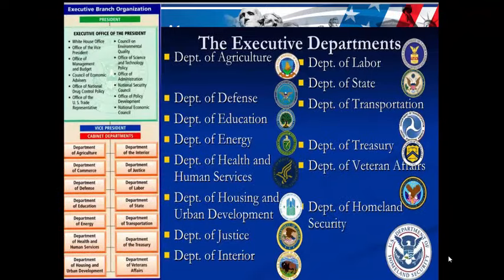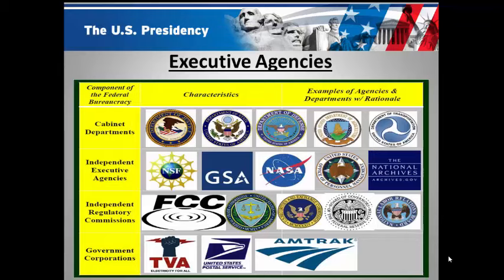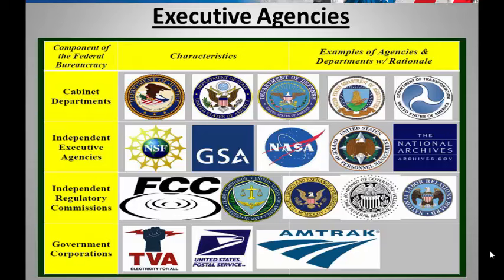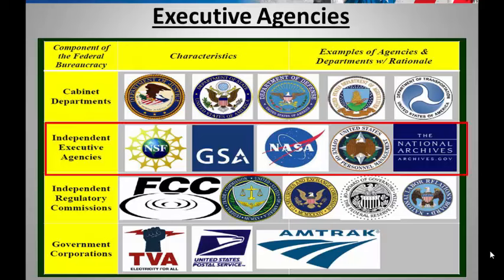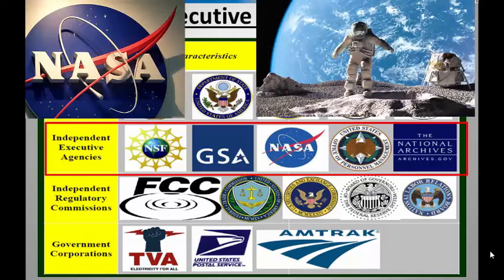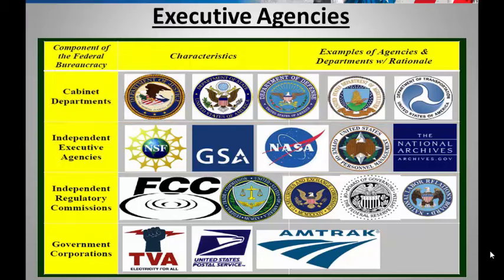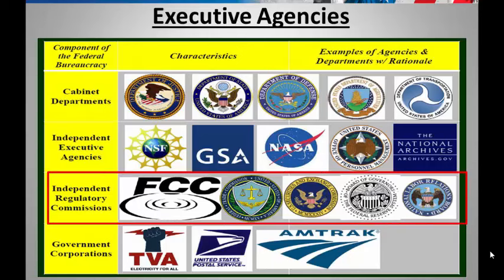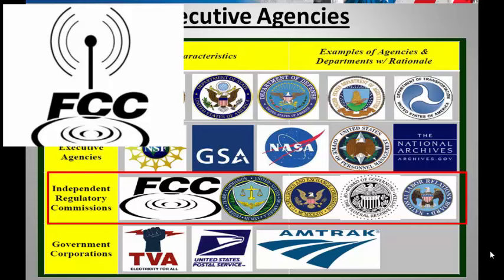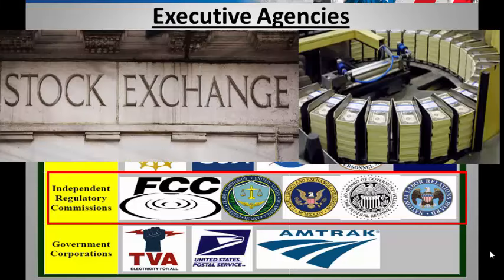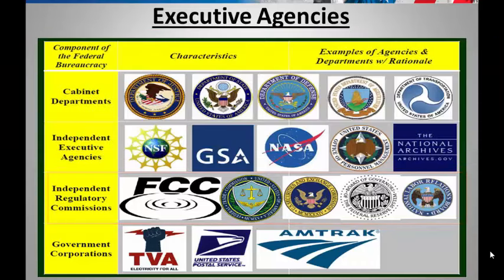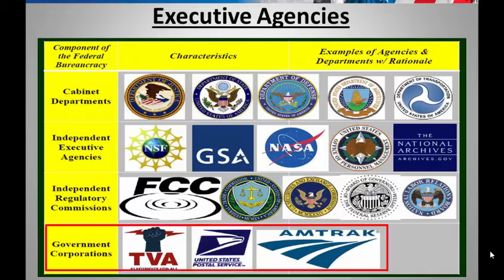In addition to cabinet departments are what are known as independent agencies, functioning kind of on their own — like NASA bringing us into outer space, or the National Archives, which keeps records and copies of important documents. There are also independent regulatory commissions like the FCC, which oversees television and radio, and the Securities Exchange and Federal Reserve that deal with our money and the stock market. Finally, there are government corporations that function like companies but are really part of the federal government, like the Post Office or the train company Amtrak.